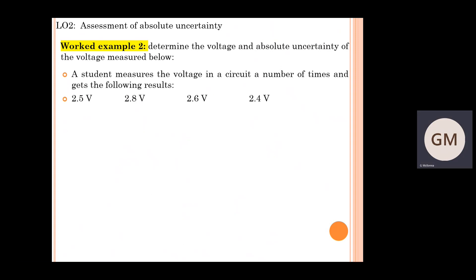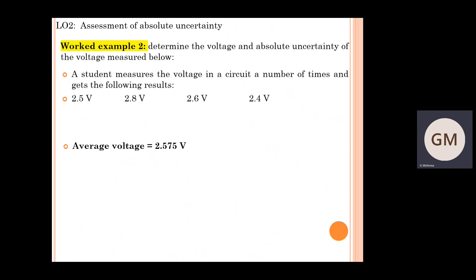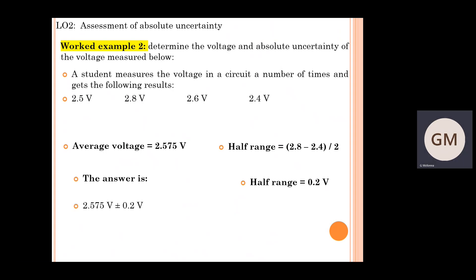Working through the second worked example: you should get an average voltage of about 2.575 volts, and half the range should come out to be 0.2 volts. Express the full set of values: 2.575 volts plus or minus 0.2 volts. Since this instrument measures to the nearest one-tenth of a volt — one decimal place — the actual voltage rounds up to 2.6 volts, and the absolute uncertainty is also given to one decimal place at 0.2 volts. That is the final answer.